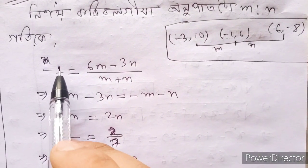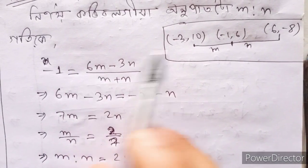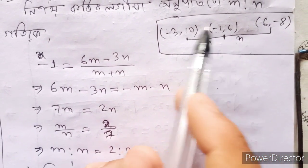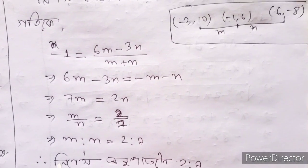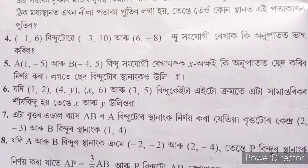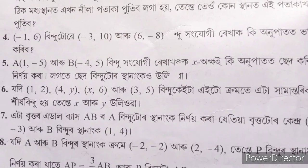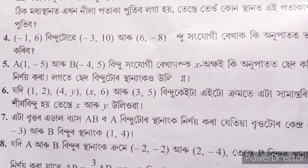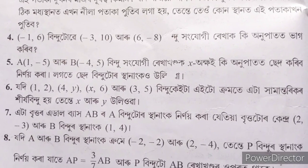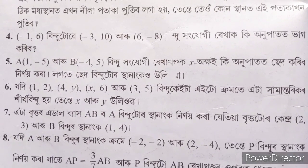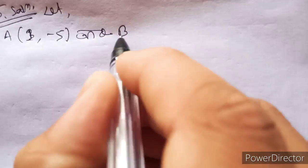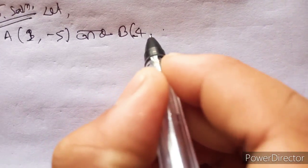We can get minus 1, 6 to the power 6 to the power m into minus 2 to the power. This is the first question. The first question: a is 1, minus 5, and b is minus 4 and 5.